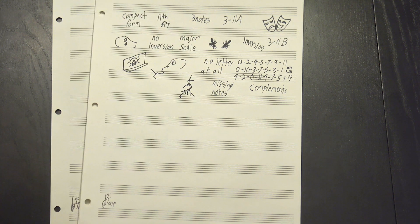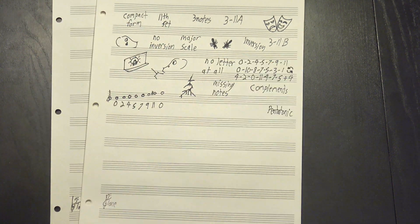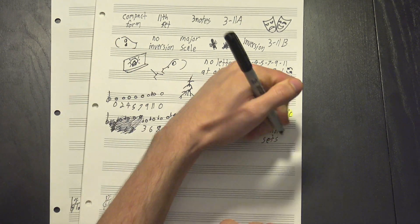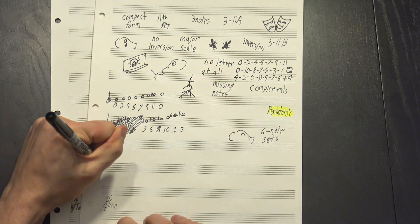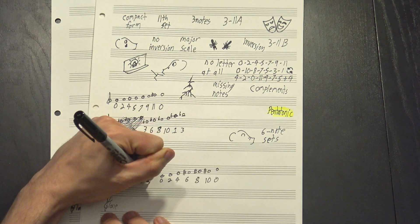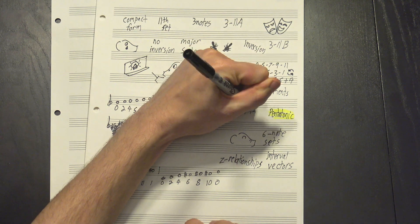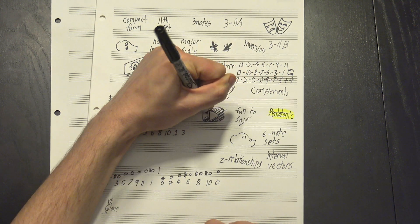For instance, if you look at the gaps in the major scale, you find a minor pentatonic hiding in there. And many six-note sets are actually their own complements, stuck in the gaps they create. And then there's something called interval vectors and z-relationships, which are really fun to say but probably deserve their own video.